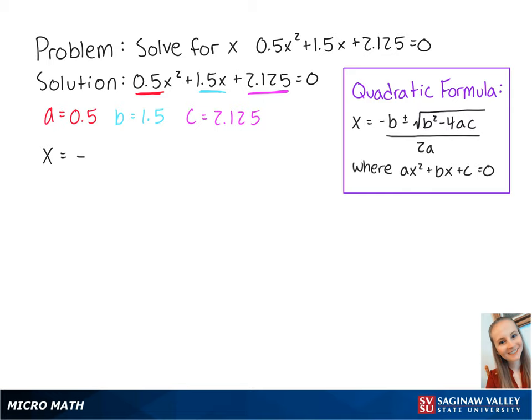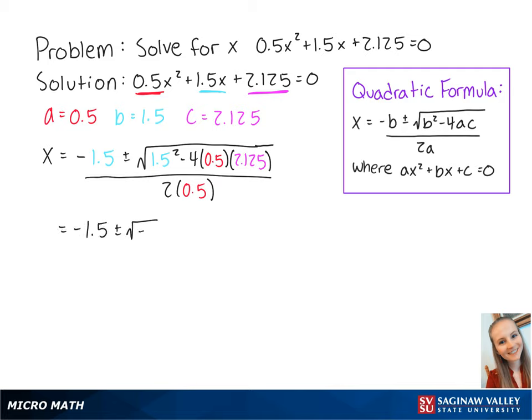we get x equals negative 1.5 plus or minus the square root of 1.5 squared minus 4 times 0.5 times 2.125 all over 2 times 0.5. This equals negative 1.5 plus or minus the square root of negative 2 all over 1.